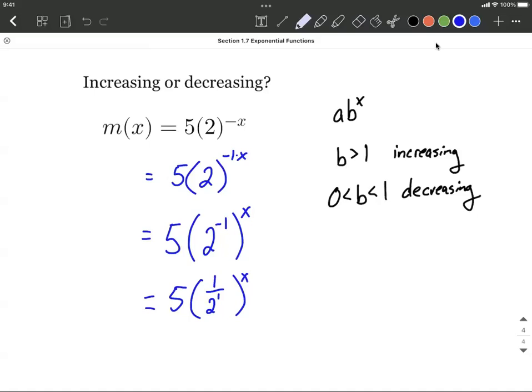So we're in that formatting and you'll see that our base here, b, fits between 0 and 1. One half is between 0 and 1, so it's decreasing over time. And there's our solution.